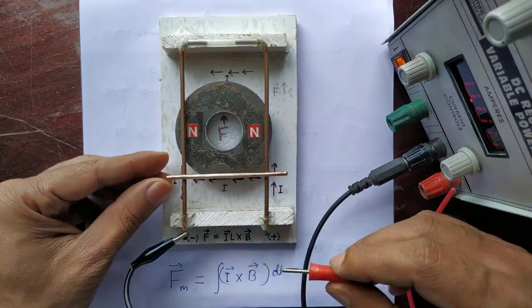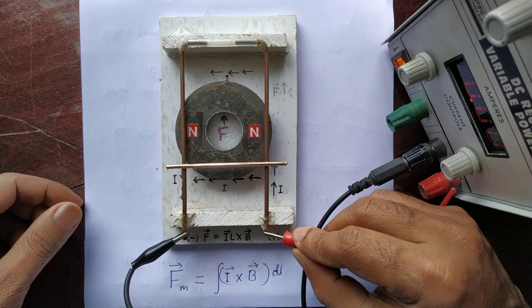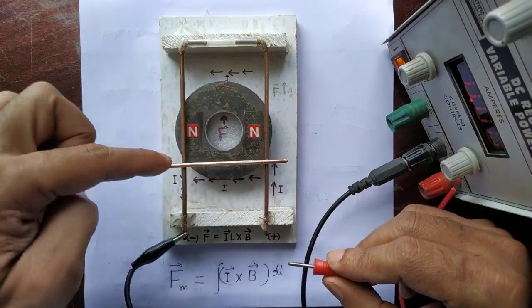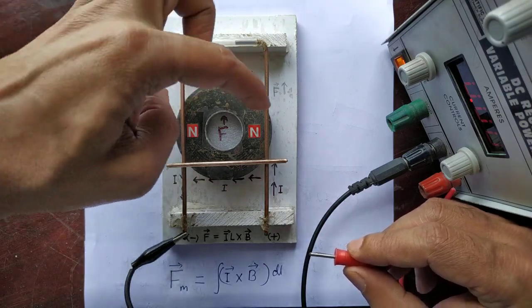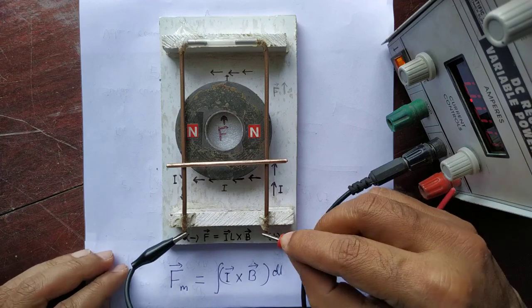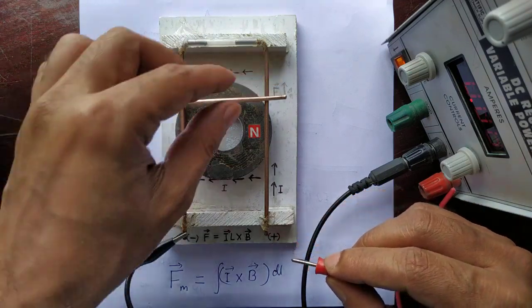So let us see what happens. Magnetic force is acting on every conductor, but these two conductors are fixed while this one is free to move. So we can see the effect of magnetic force on this conductor.